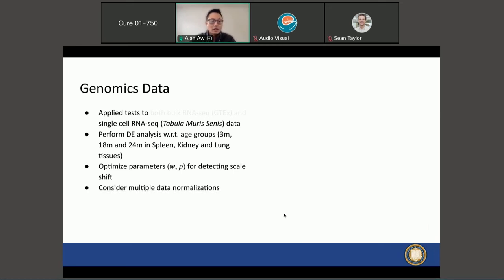On top of that, we also considered multiple data normalizations: the raw counts, the log counts, and what is called sctransform or the variance stabilizing transform that uses the Pearson residuals.